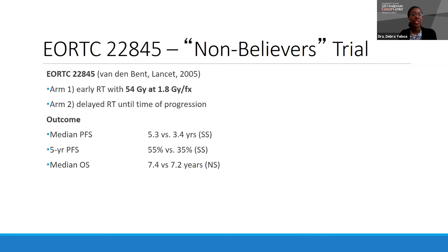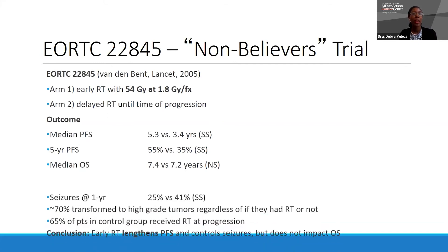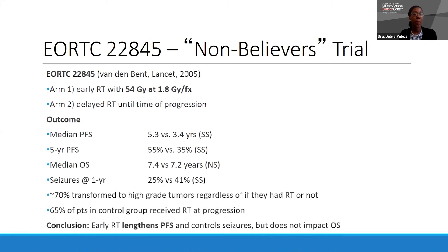The next important study for radiation oncologists is the EORTC study — sometimes called the 'non-believers' study in the United States — which randomized patients to early versus delayed radiation therapy. Patients had improved progression-free survival with early radiation therapy but no necessarily improvement in overall survival. For seizure risk, it actually went down for patients who received early radiation therapy: 25% versus 41%. So while we aren't always advocating for early treatment, when patients ask about seizure risk with radiation, we highlight that treating the tumor will actually improve seizures, and radiation does address that.